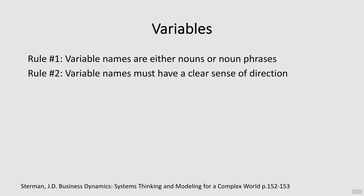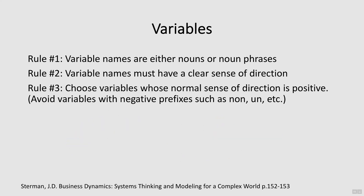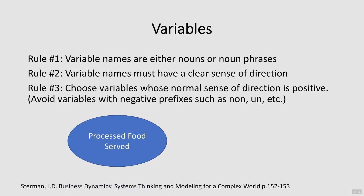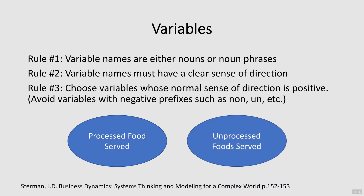Rule number three: choose variables whose normal sense of direction is positive. Avoid variables that have negative prefixes such as non and un. Using negative prefixes will make it more difficult to follow the link in your model. For example, use processed foods served instead of unprocessed foods served.